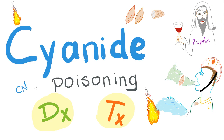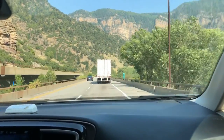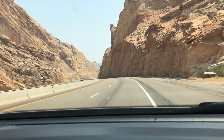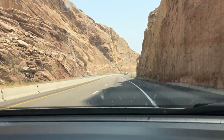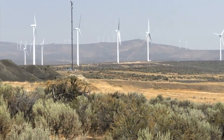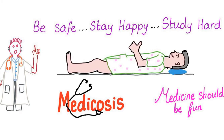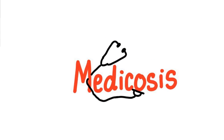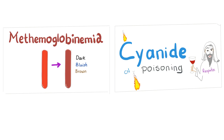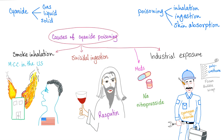Don't forget they tried poisoning Rasputin by giving him cyanide. As you know from the previous lecture, cyanide could be gas, liquid, or solid. Cyanide poisoning could be due to inhalation, ingestion, or skin absorption.